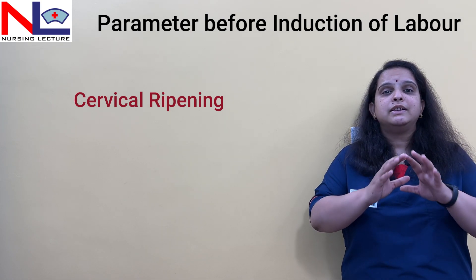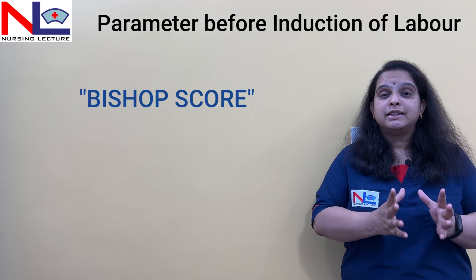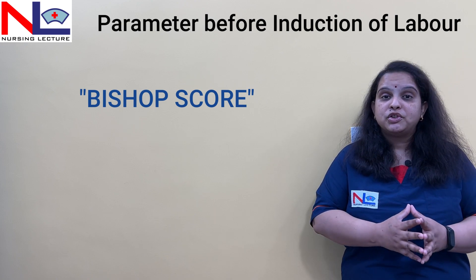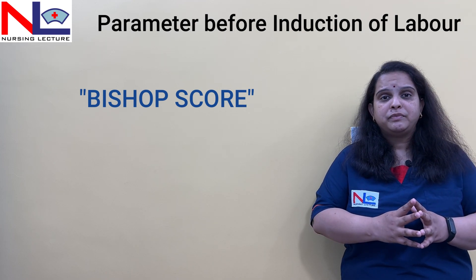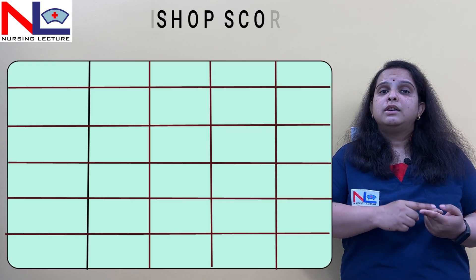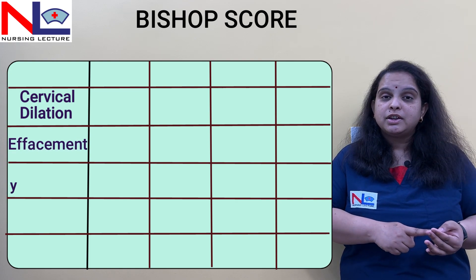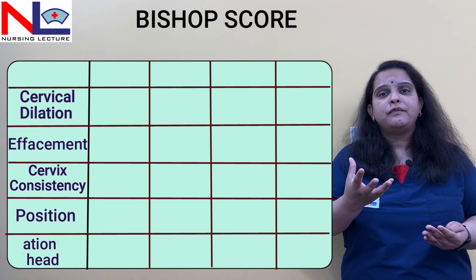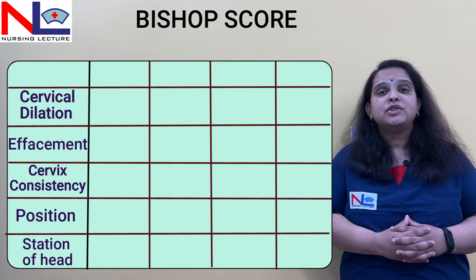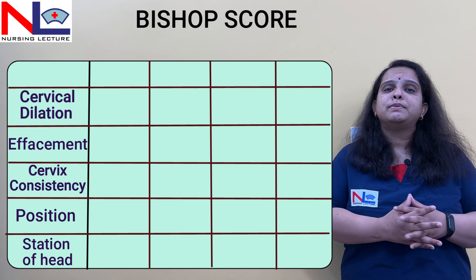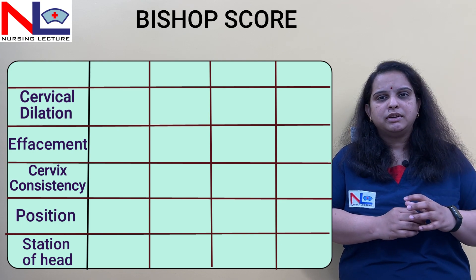These changes are assessed using a scoring system called Bishop scoring. Bishop scoring was described by Edward Bishop in 1964, where major cervical changes are checked prior to inducing labour. The parameters checked are: cervical dilatation, effacement, position, consistency, and the station of the fetal head in relation to the ischial spine. In modified Bishop scoring, effacement is replaced by cervical length measured in centimeters.